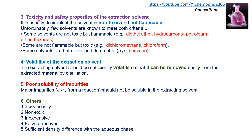The third property is toxicity and safety. The extraction solvent should be non-toxic and non-flammable; unfortunately, few solvents meet both criteria. Some solvents are non-toxic but flammable — for example, diethyl ether, hydrocarbon, petroleum ether, and hexanes. Some solvents are non-flammable but toxic — such as dichloromethane and chloroform. Some solvents are both toxic and flammable, such as benzene. We prefer solvents that cause the least damage to the operator and the environment.